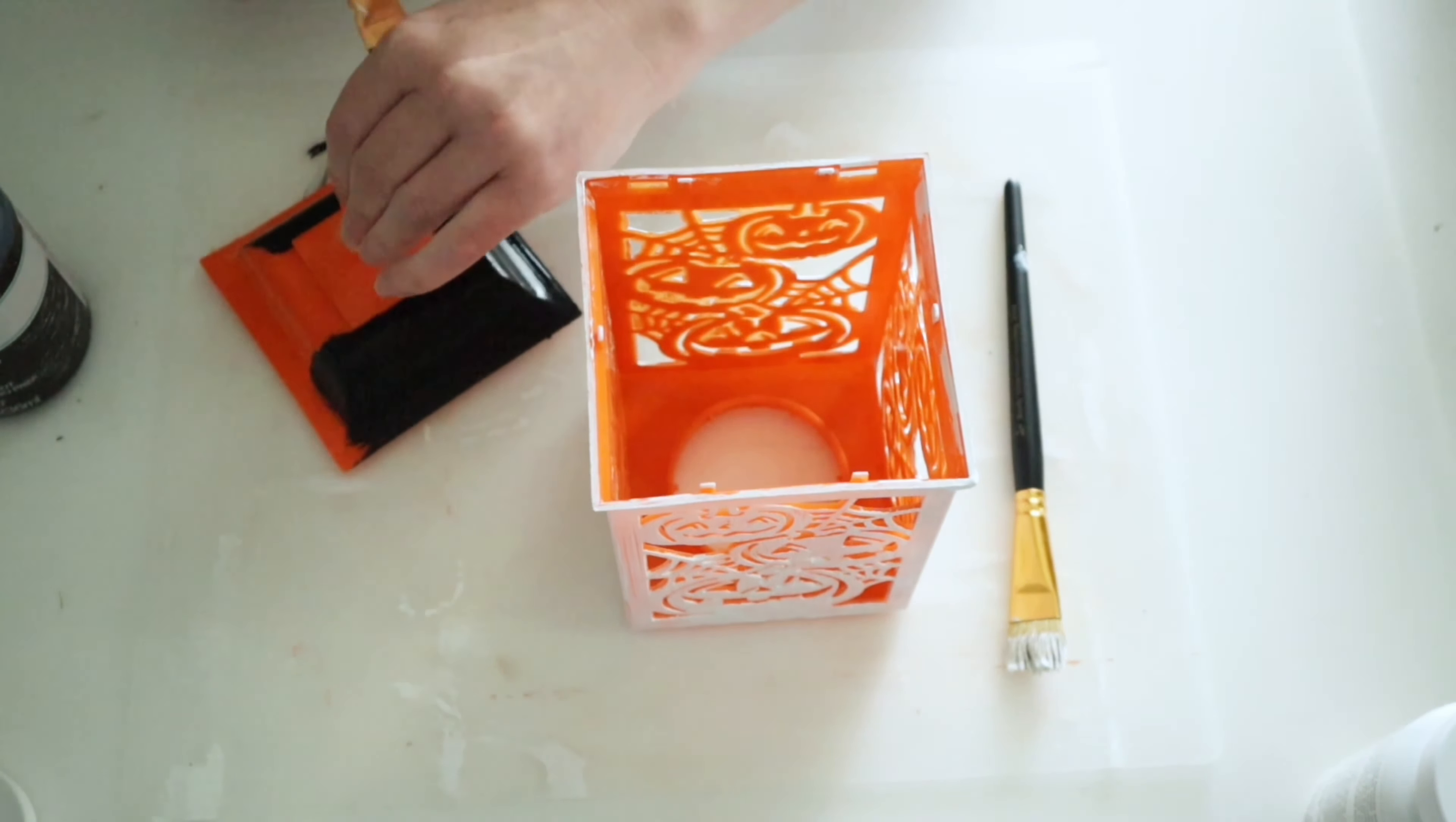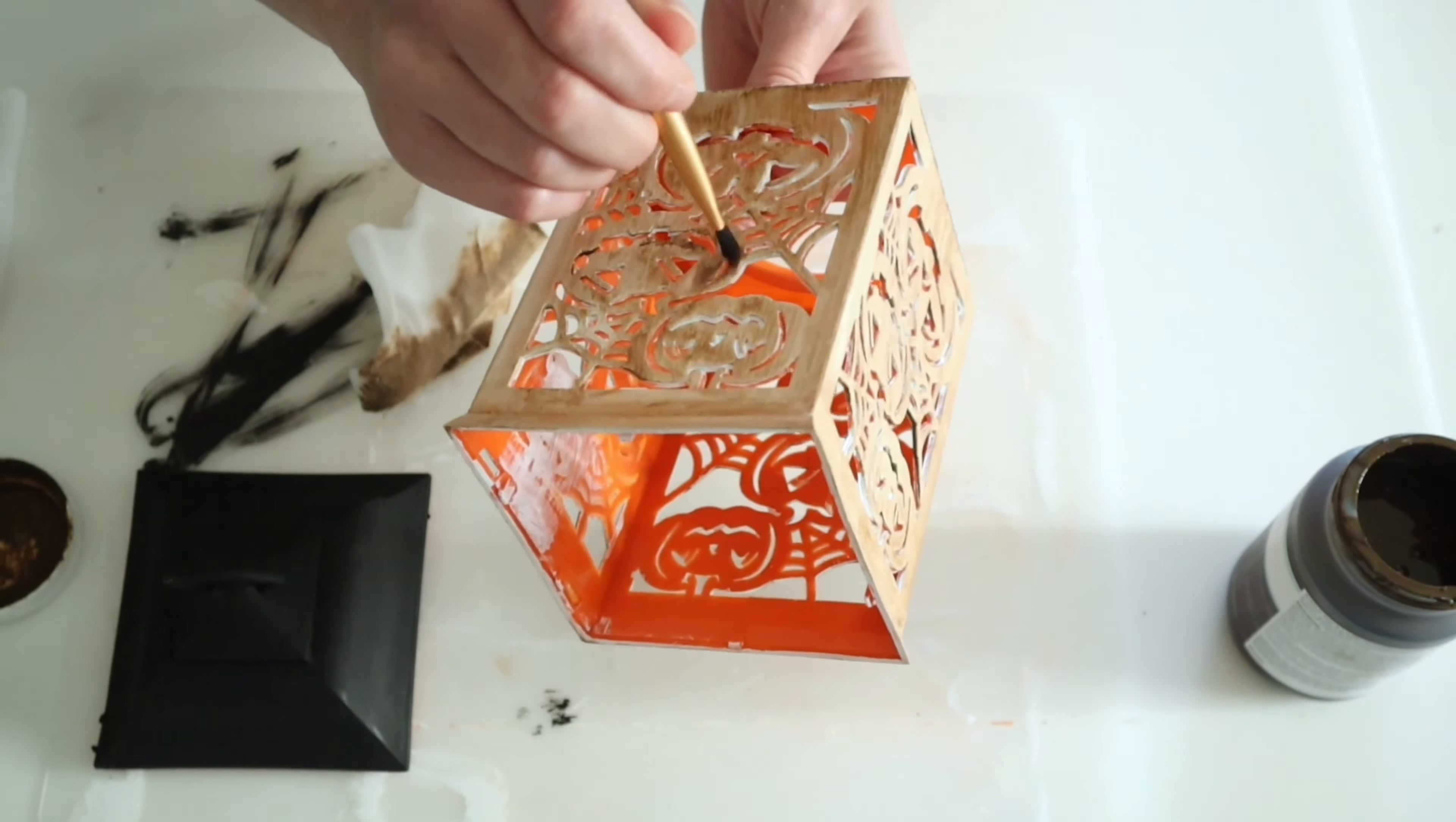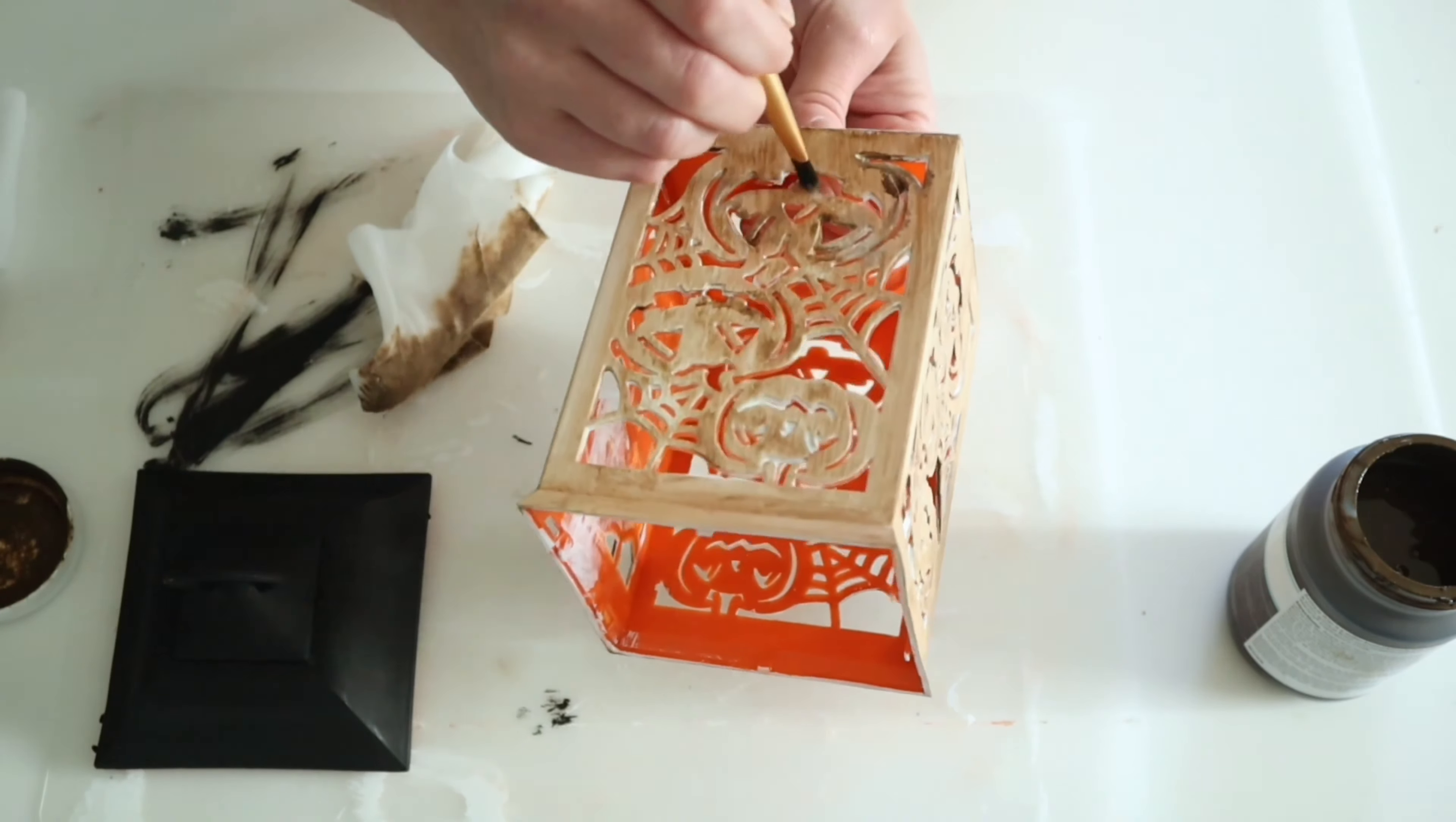Then once my lantern was dry, I am going to take a baby wipe with some of my antique wax and I'm going to go over the lantern. I did have to use a brush to get into the crevices, but this is going to give it that nice wood look. I also ended up going back in and painting the inside of the lantern black as well.